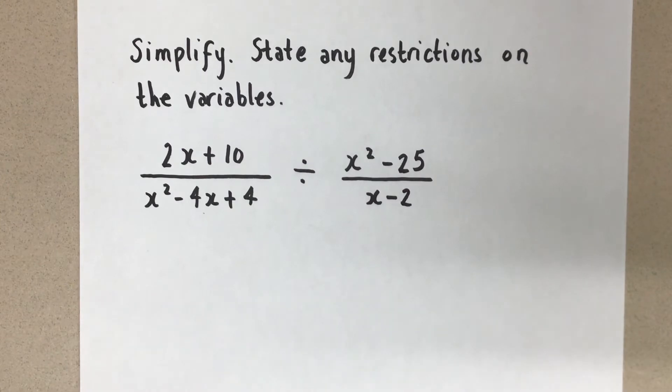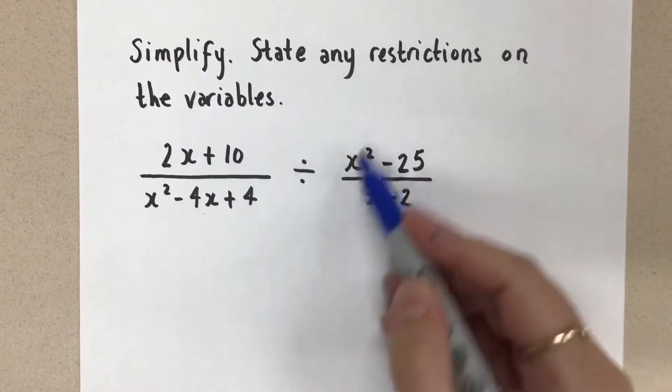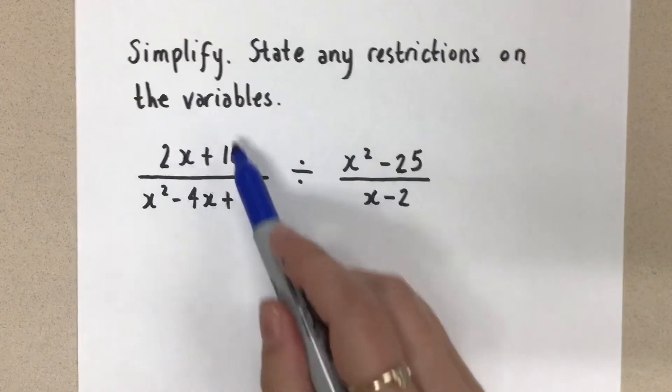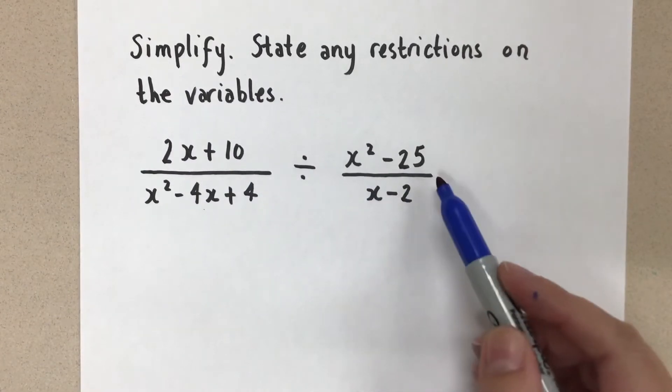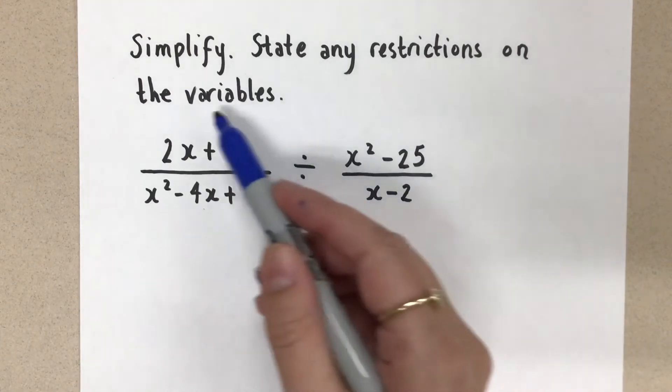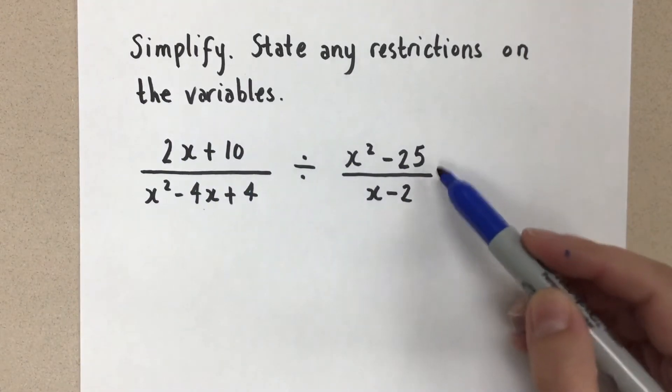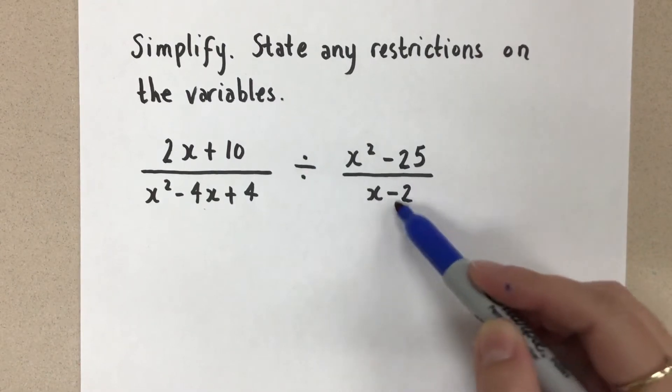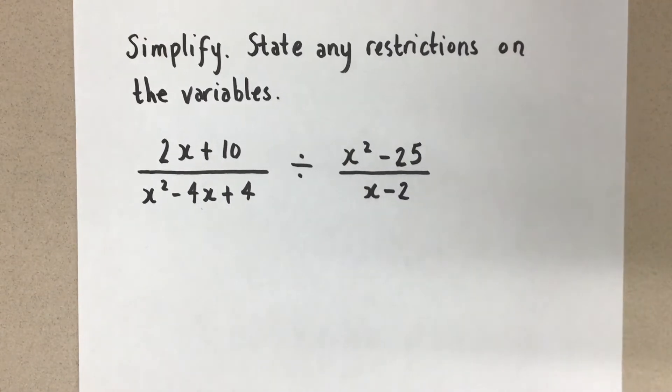Rational expressions are like fractions, so what I have here is really a fraction divided by another fraction. If you think about how we divide fractions, we keep the first fraction as it is and then multiply by the reciprocal of the second fraction. So we really need to take this rational expression and multiply by the reciprocal of this. We're going to put the denominator in the numerator and the numerator in the denominator, and that's how we're going to simplify.